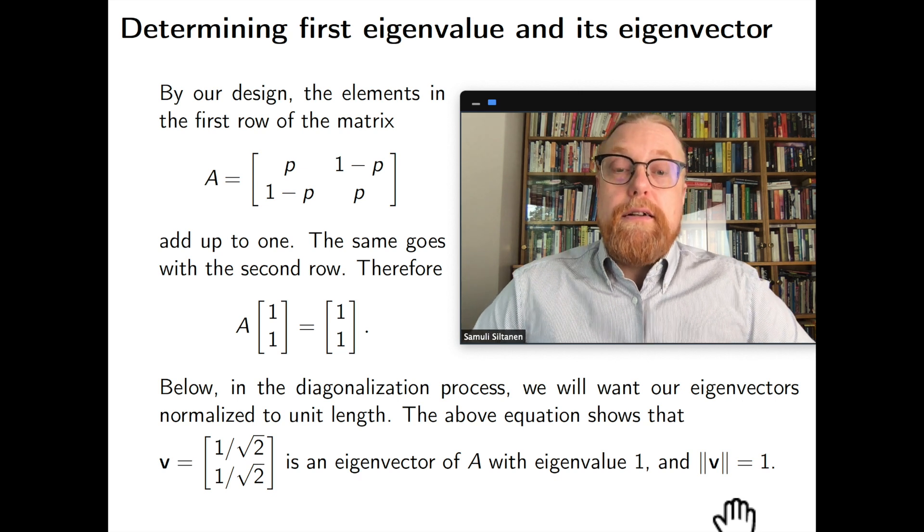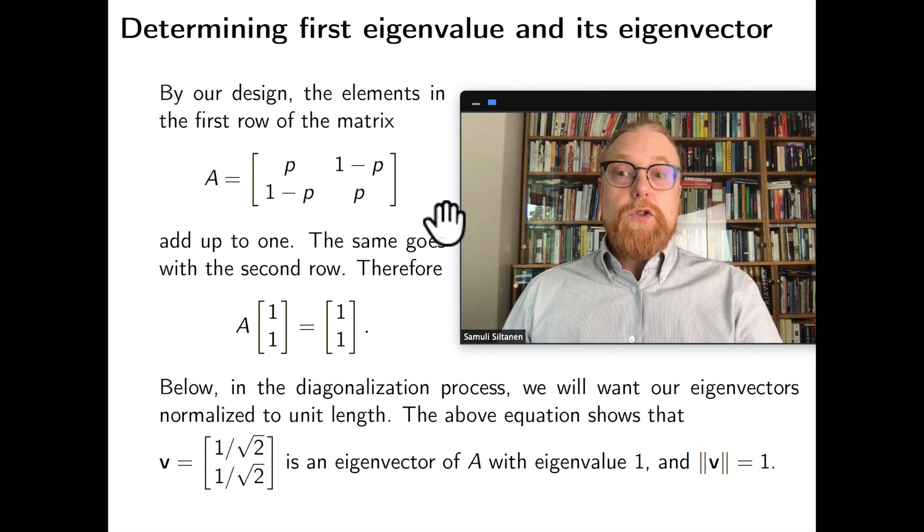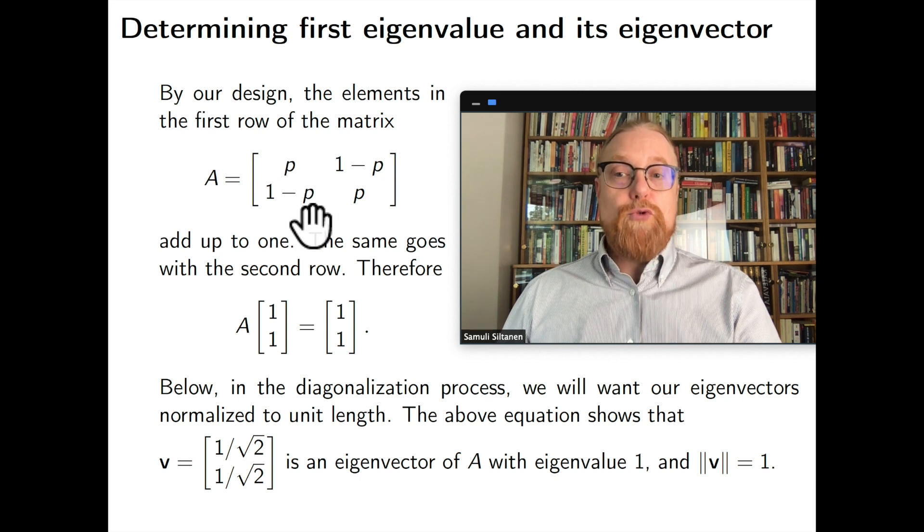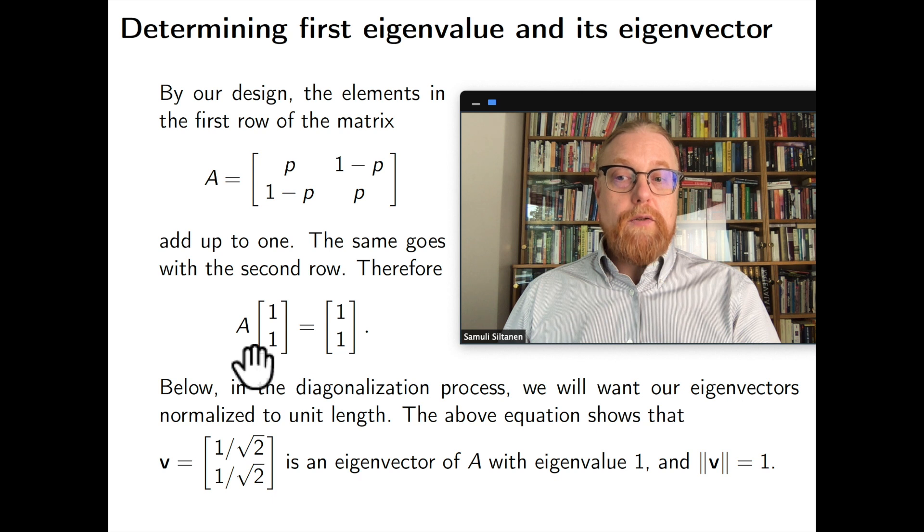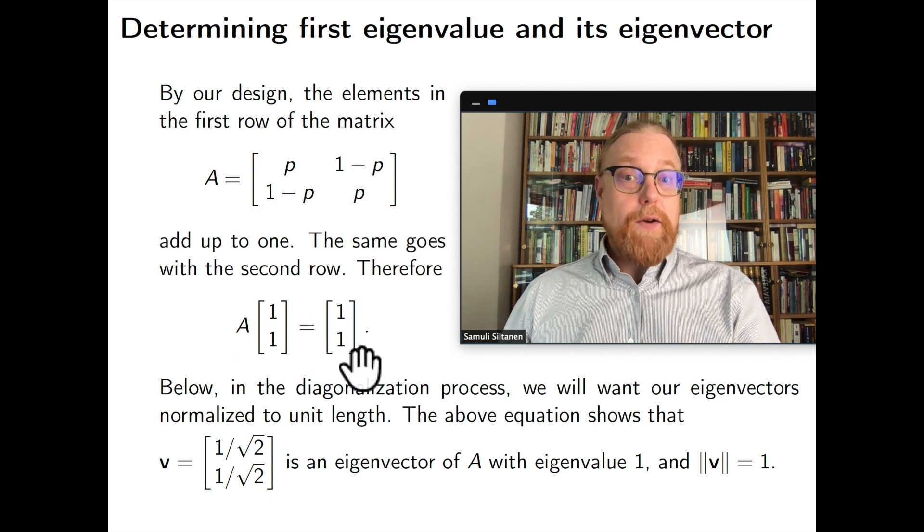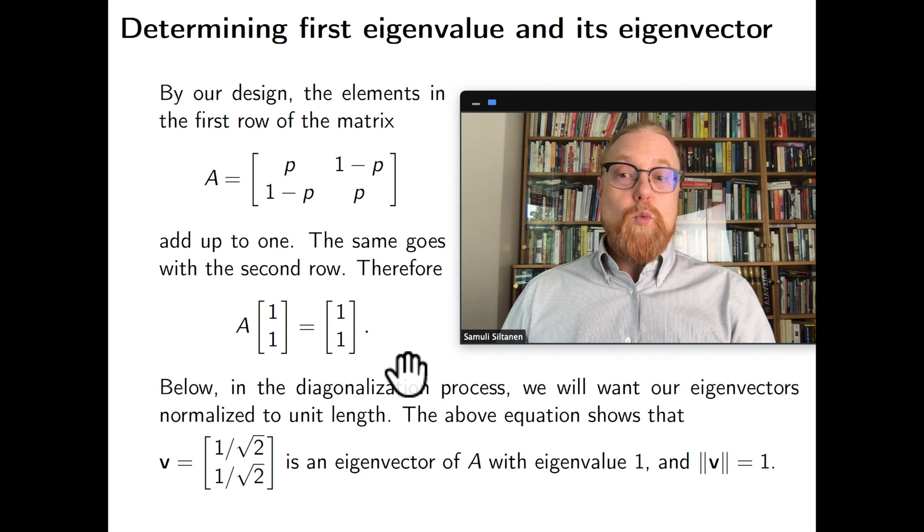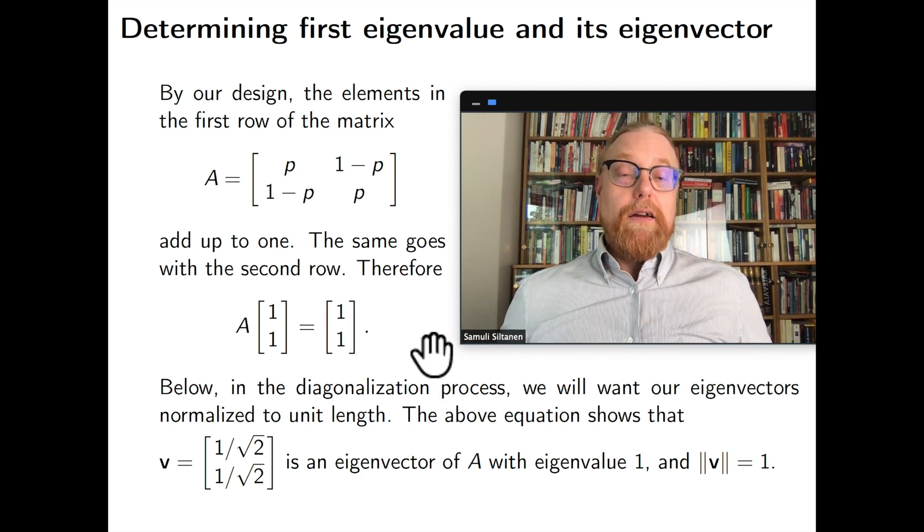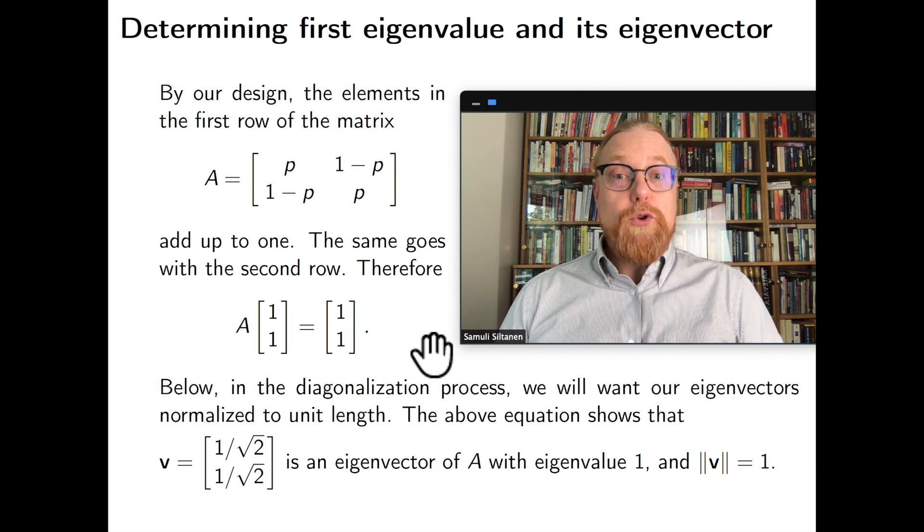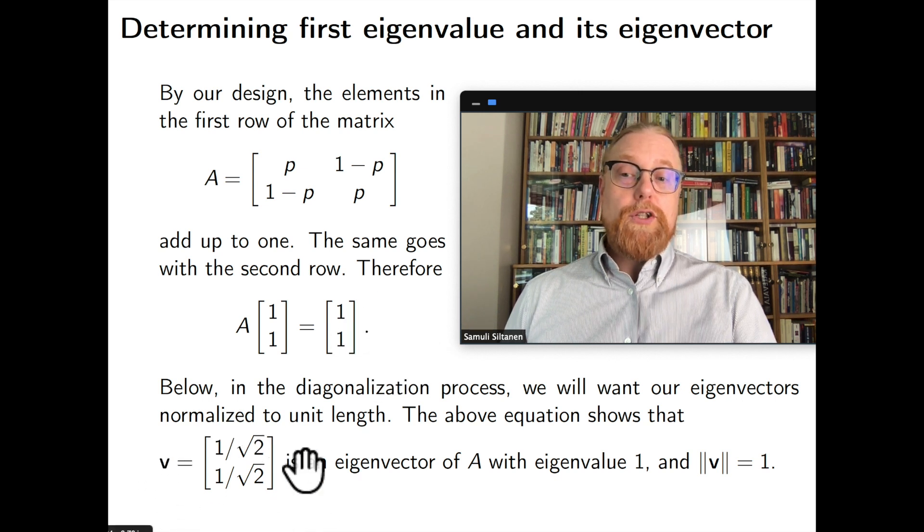So let's find the eigenvectors and eigenvalues for matrices A of this specific form. So first of all, let's remember that both of our rows here sum up to one. Therefore, if we multiply this vector one and one with matrix A, we will get the same vector one and one. So this means that one one is an eigenvector for matrix A with eigenvalue one. Actually we want our eigenvectors to be of unit length. So we can divide this vector by its own length. So actually we'll take our first eigenvector to be this one and the corresponding eigenvalue one.